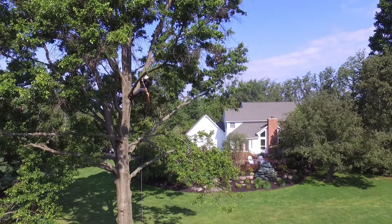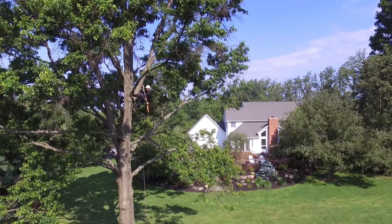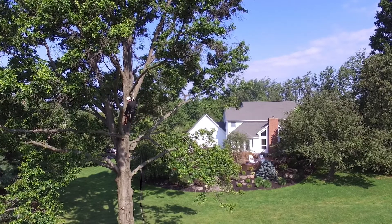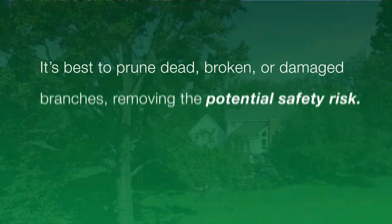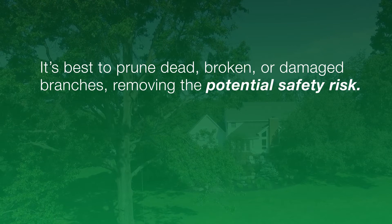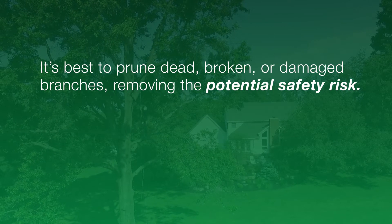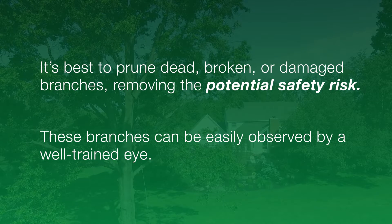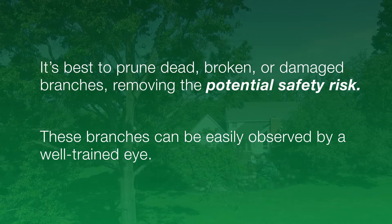The process begins with visual observation. Some problems are easier to spot than others. If you notice a serious physical defect with your tree, you can have a professional arborist out to assess it and begin to address it. Some problems can be addressed with pruning. Pruning is one of the best things you can do for your trees when it comes to being proactive in the area of tree safety. It's best to prune dead, broken, or damaged branches, removing the potential safety risk. These branches can be easily observed by a well-trained eye.